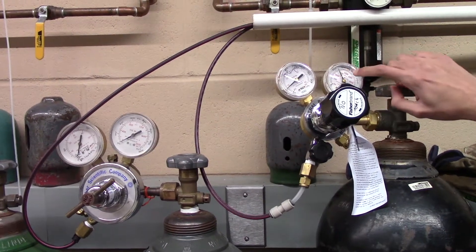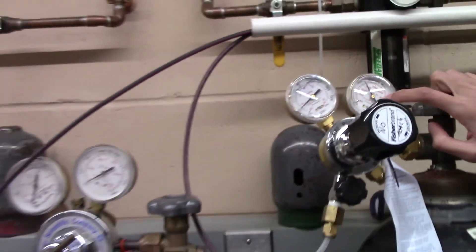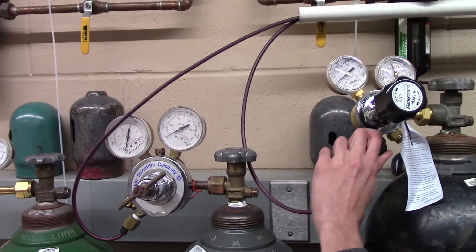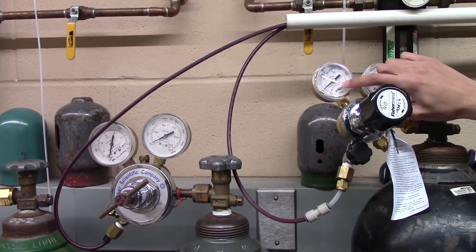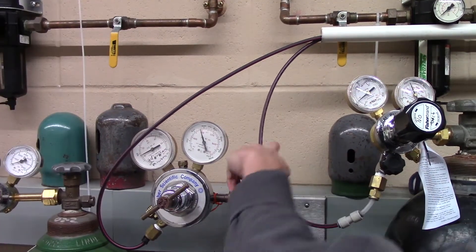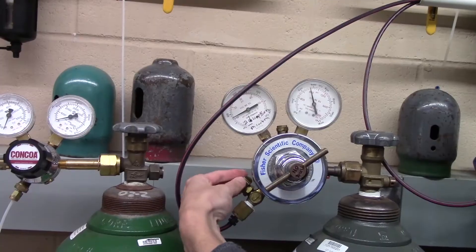Begin by opening the nitrogen gas tank's valve followed by the outlet valve, which is a small black knob, making sure that there are readings on the regulator dial indicating gas is flowing out of the tank. Follow these same steps to open the carbon dioxide tank.